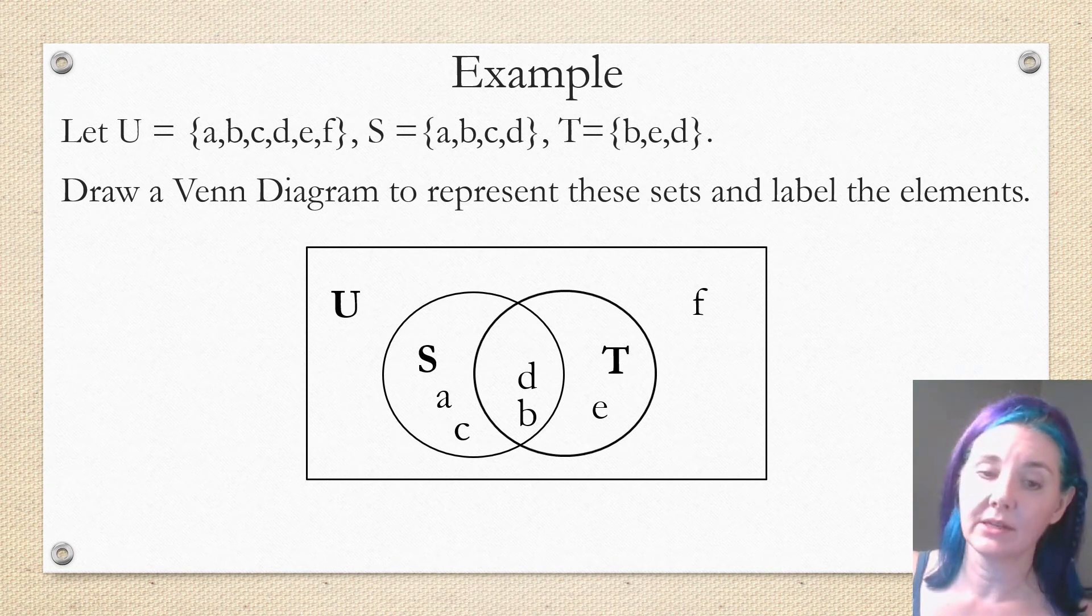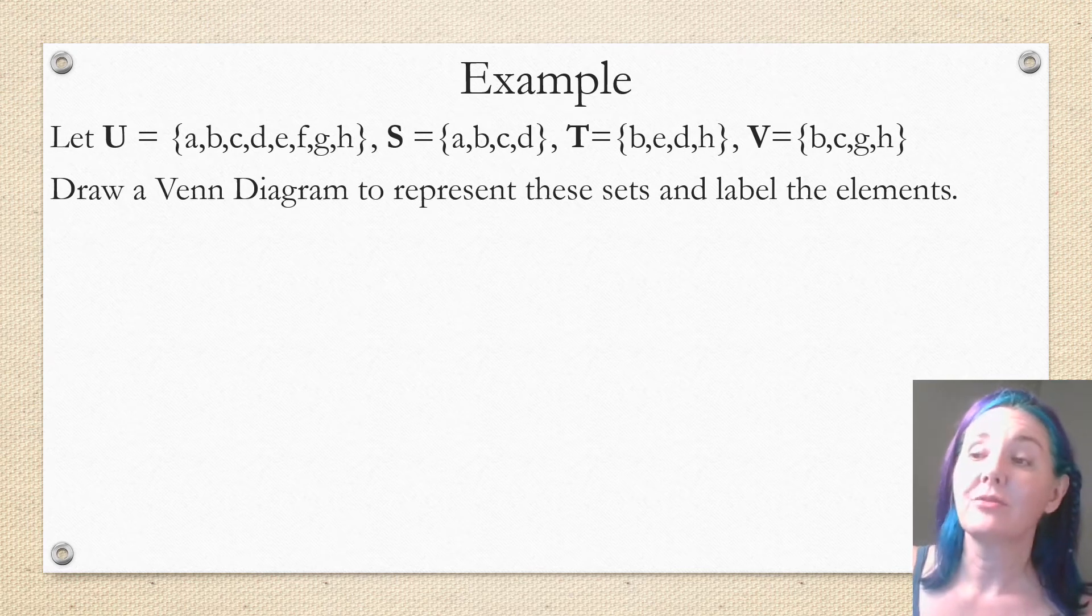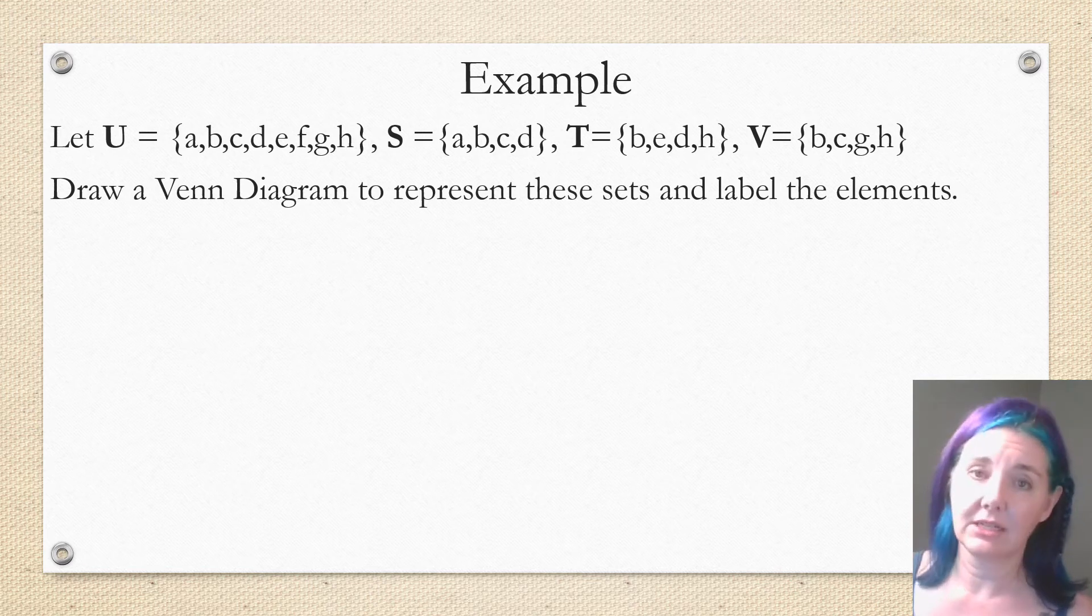Let's look at one more example. This is an example of a Venn diagram of three sets. So in this case, the universal set U is all the letters from A through H. S is A, B, C, D, T is B, E, D, H, and V is B, C, G, H.